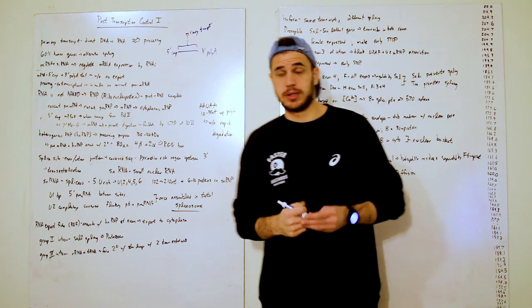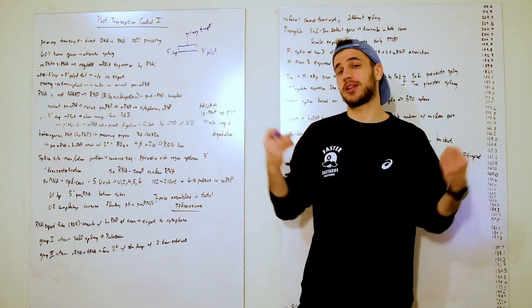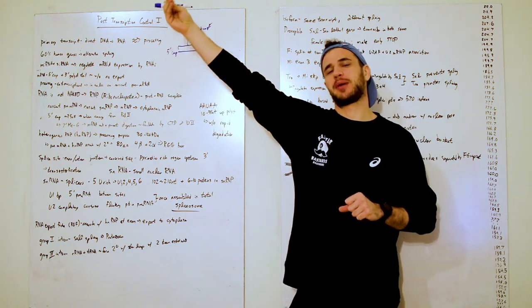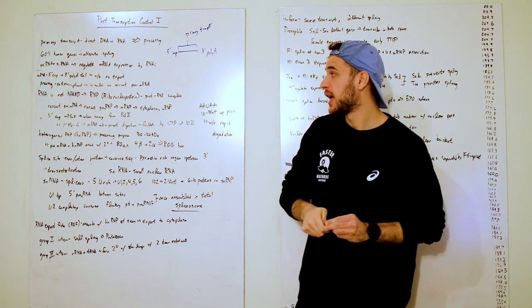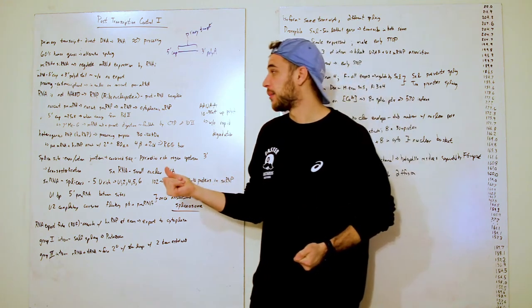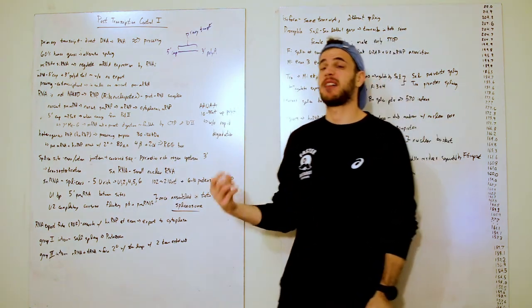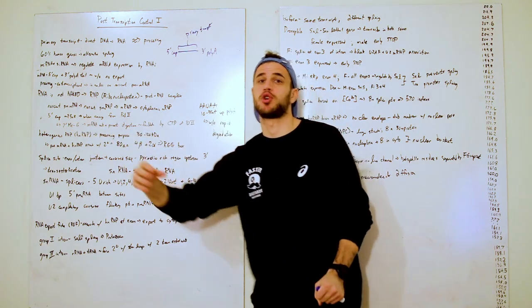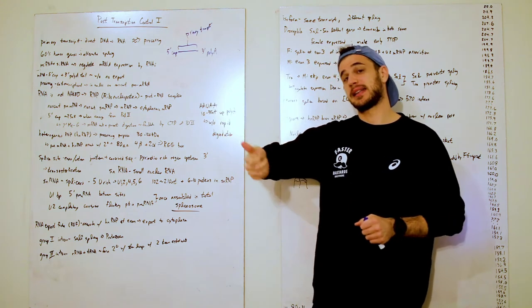So, how does this processing occur, what does the process, this processing of adding these guys on. And it's co-transcriptionally done. So, as the RNA is just kind of meandering outside of the polymerase, it is also being processed. And so, this starts immediately at about 25 nucleotides into this transcription, where the 5' cap is made.